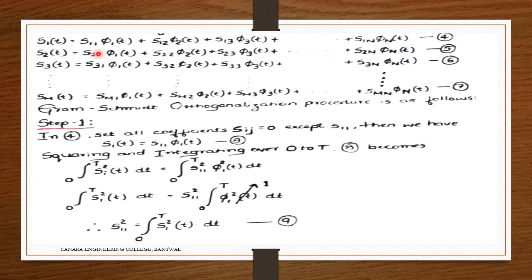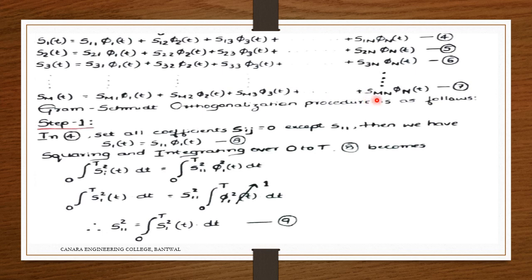The expanded equations are: S1(t) = S11·pi_1(t) + S12·pi_2(t) + S13·pi_3(t) + ... + S1N·pi_N(t) — equation 4. S2(t) = S21·pi_1(t) + S22·pi_2(t) + S23·pi_3(t) + ... + S2N·pi_N(t) — equation 5. S3(t) = S31·pi_1(t) + S32·pi_2(t) + S33·pi_3(t) + ... + S3N·pi_N(t) — equations 6 and 7.